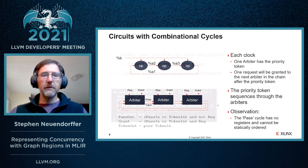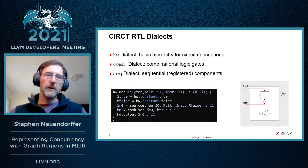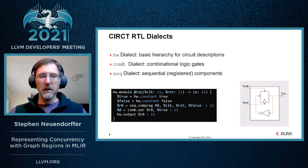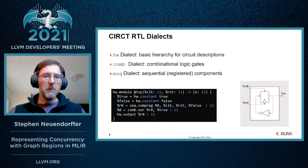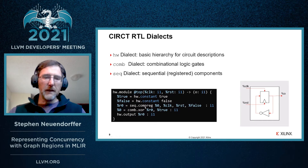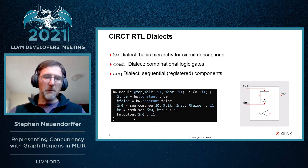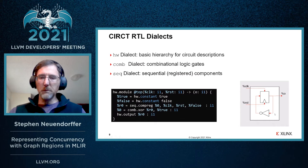In the CIRCT LLVM incubator project, there are a few dialects used together to represent circuits like this. One is the hardware dialect, which gives us a basic hierarchy for representing circuit descriptions and defines the hw.module operation that contains a graph region. There are also two other dialects for representing combinational operations and sequential operations. The comp.reg operation from the seq dialect represents a register in the circuit, and the xor operation from the comb dialect combined with some constant operations from the hardware dialect represent a not gate.